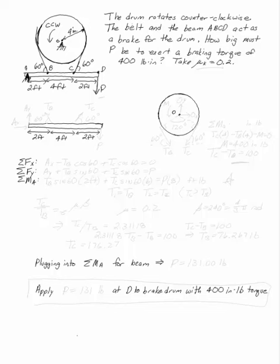The drum rotates counterclockwise. The belt and the beam act as the brake for the drum. I want to know how big my P needs to be so that I can exert a braking torque of 400 inch-pounds on my drum, where the coefficient of kinetic friction for the belt slipping on the drum is 0.2.